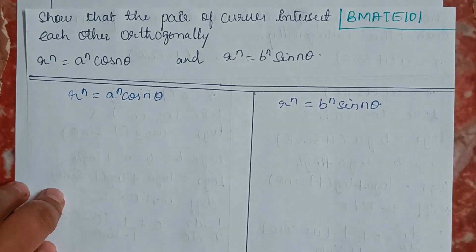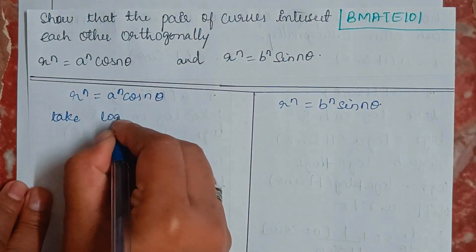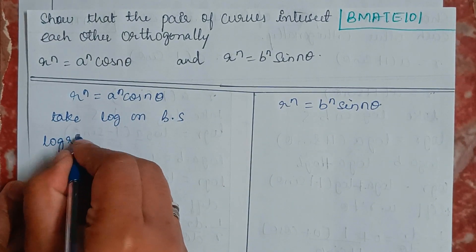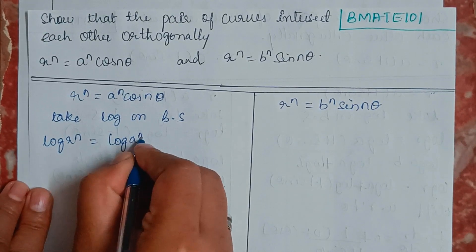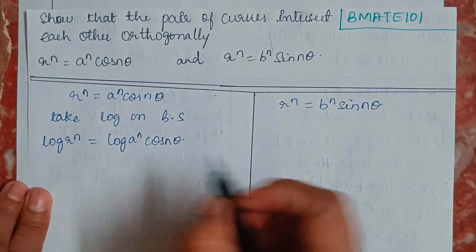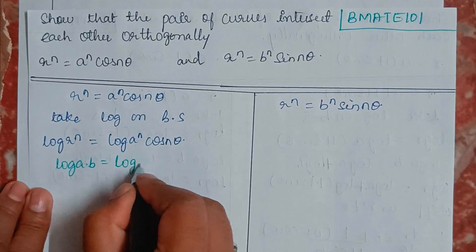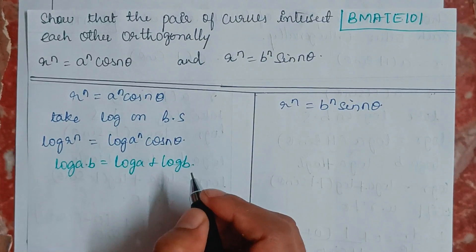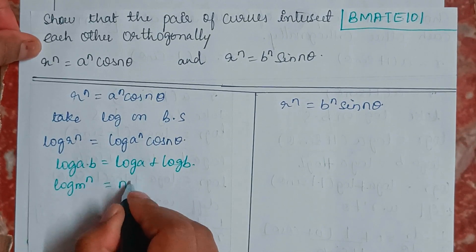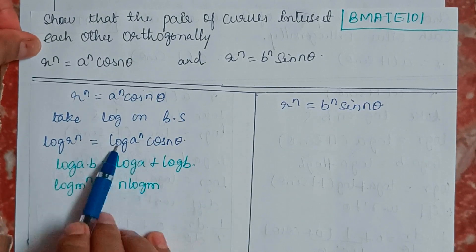Now we know how to solve this. First, we take log on both sides. We know that log(a·b) equals log a plus log b, and log(m^n) equals n·log m. Using these two formulas, we will expand this.